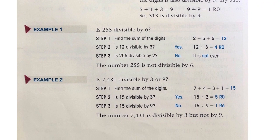Now let's look at some examples. Is 255 divisible by 6? Find the sum of the digits: 2 plus 5 plus 5 is 12. Is 12 divisible by 3? Yes — you get four 3s in 12 with no remainder. But is 255 divisible by 2? No, it's not even. So 255 is not divisible by 6, because it has to be divisible by both 3 and 2.